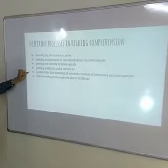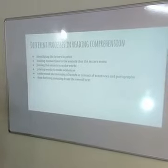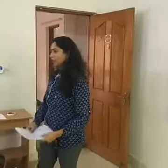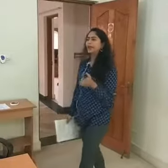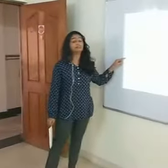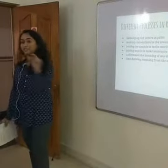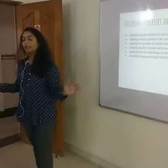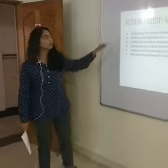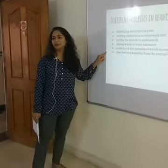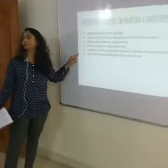Then we try and understand the meaning of words in the context of sentences and paragraphs. In the sentence 'the pan is hot', 'hot' could mean two things — hot as in temperature, and hot as in pungent or spicy. But when we read 'the pan is hot', our mind tells us it refers to the temperature of the pan. And then we try and derive meaning from the overall text. So our mind goes through so many complex processes, but very often we don't even realize it because we're so fluent in reading and understanding.